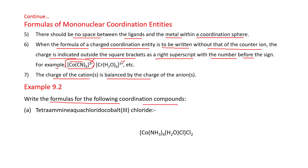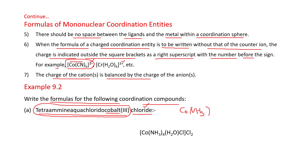Write the formula for: tetra-amine-aqua-chlorido-cobalt(III) chloride. This entire single-word portion is the coordination entity, and 'chloride' at the end is the counter ion. First, we list the metal atom, cobalt (Co). Then tetra-amine: amine is NH3, and tetra means four times, so (NH3)4. Then aqua: aqua is H2O, a polyatomic ligand enclosed in parentheses. Then chlorido: Cl. Close the coordination entity in square brackets. The counter ion is Cl.